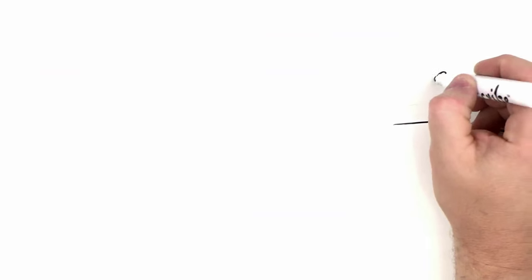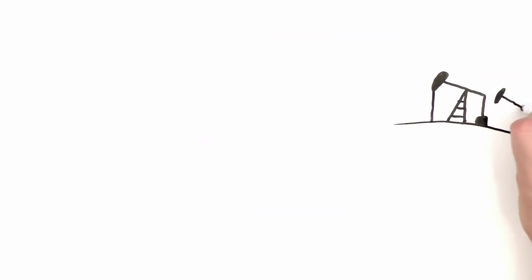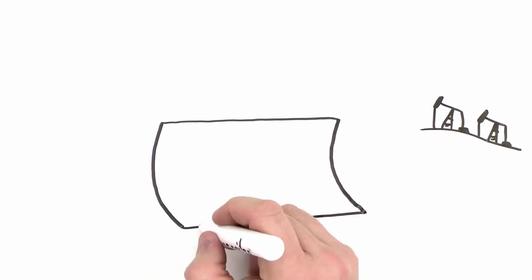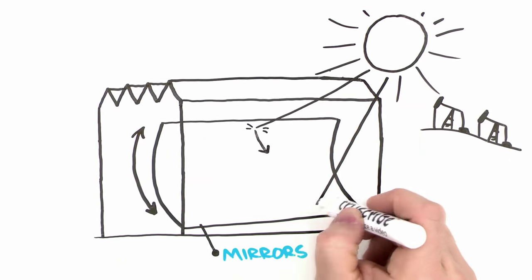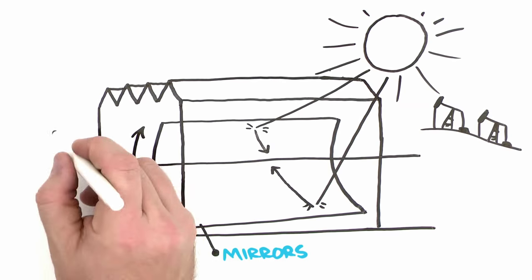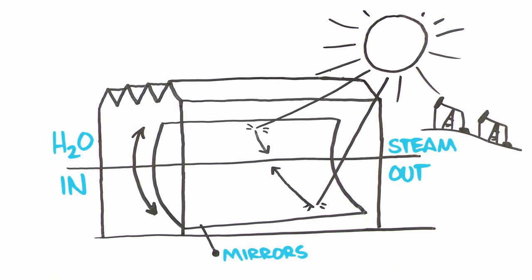GlassPoint solar steam generators were designed specifically for the oil and gas industry. Mirrors inside a glasshouse track the sun, focusing its heat onto a pipe containing water, turning it into steam.